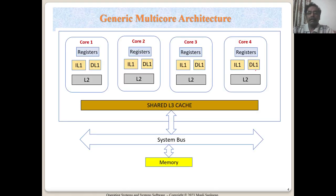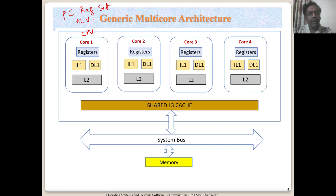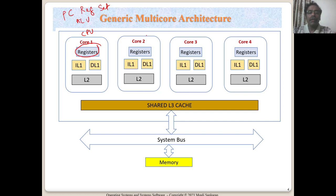This is a simple four-core processor where each core is an individual CPU. When I say individual CPU, you can imagine it has its own program counter and the entire register set — including the stack pointer, link register, R0, R1 — everything you know about an ARM processor. It includes the ALU, any multiplier, and any other hardware inside a single core.